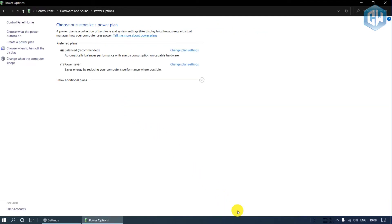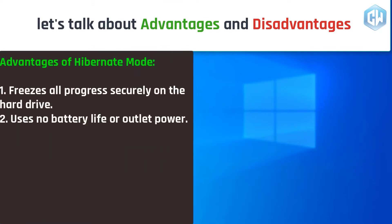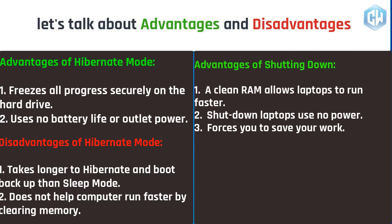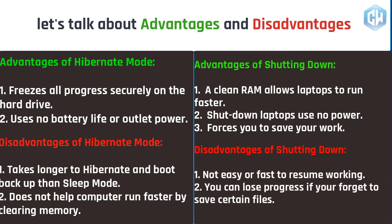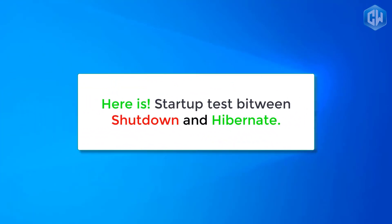Click Save Changes. Now let's talk about advantages and disadvantages. Advantages of hibernate mode: one, it freezes all progress securely on the hard drive; two, it uses no battery or outlet power. Disadvantages of hibernate mode: one, it takes longer to hibernate and boot back up than sleep mode; two, it does not help the computer run faster by clearing memory. Advantages of shutting down: one, clean RAM allows laptops to run faster; two, shutdown uses no power; three, it forces you to save your work. Disadvantages of shutting down: one, it is not easy or fast to resume working; two, you can lose progress if you forget to save certain files.